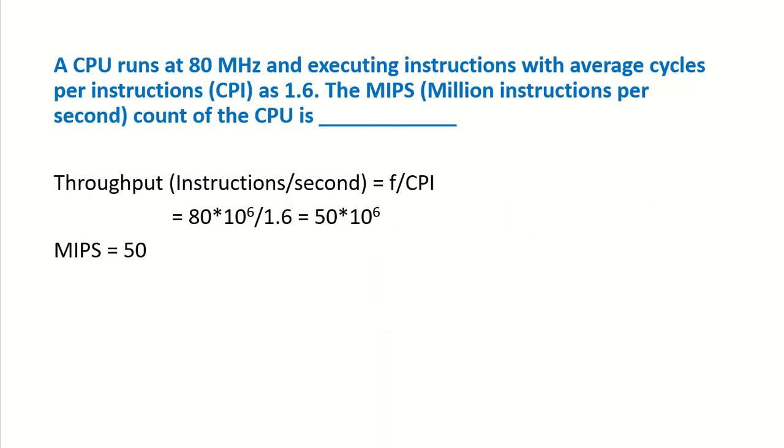The second example is that a CPU runs at 80 MHz and executing instructions with average cycles per instruction, which is our CPI, as 1.6. So what will be the MIPS? MIPS, we have done earlier, is million instructions per second count of the CPU. You can check my earlier video on processor performance to understand what is MIPS.